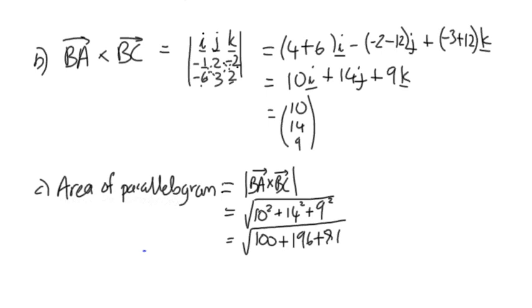And if we work all of that out, we end up with the square root of 377, which we can approximate, if we need to, to 19.4 square units.